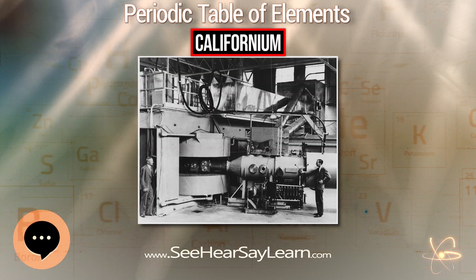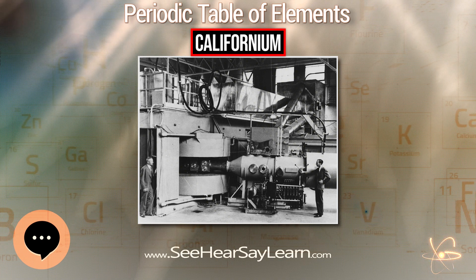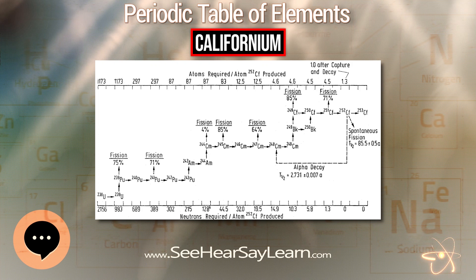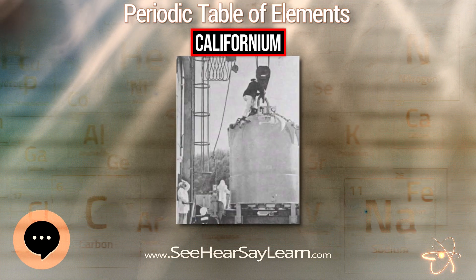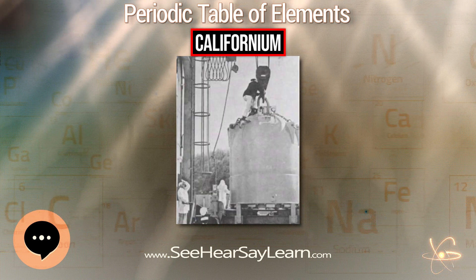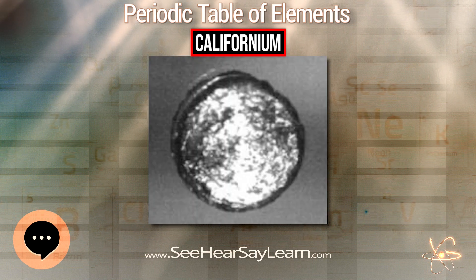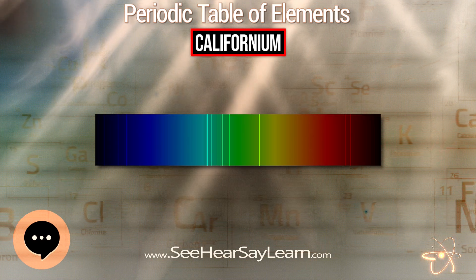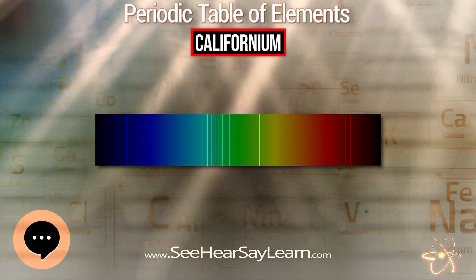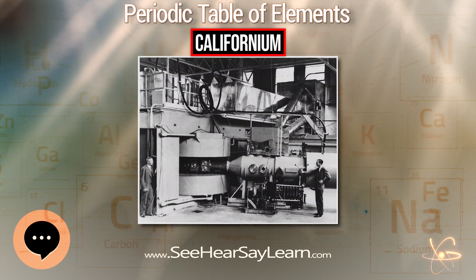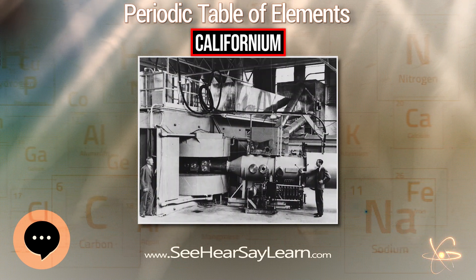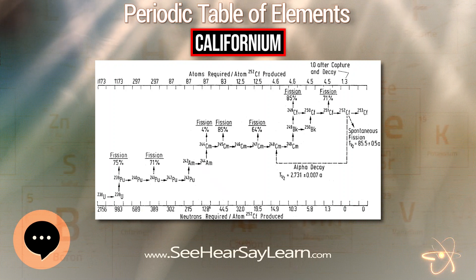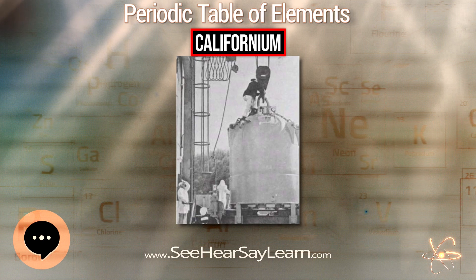Californium is one of the few transuranium elements that have practical applications. Most of these applications exploit the property of certain isotopes to emit neutrons. For example, californium can be used to help start up nuclear reactors and is employed as a source of neutrons when studying materials using neutron diffraction and neutron spectroscopy. Californium can also be used in nuclear synthesis of higher-mass elements.